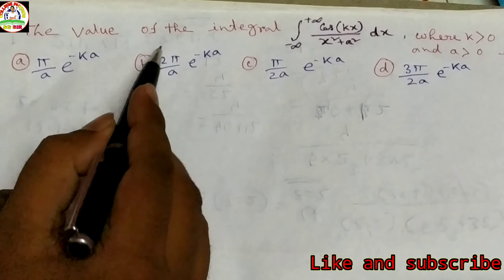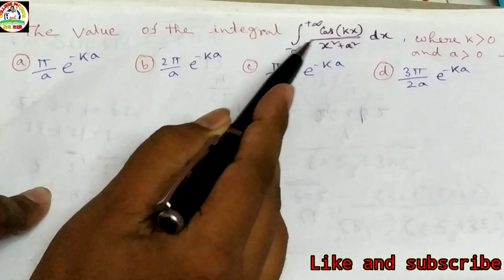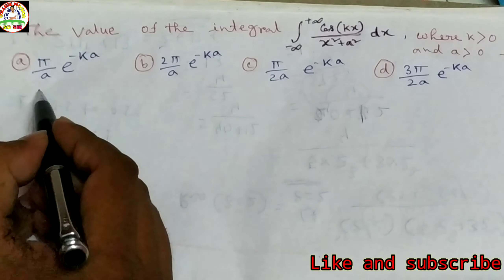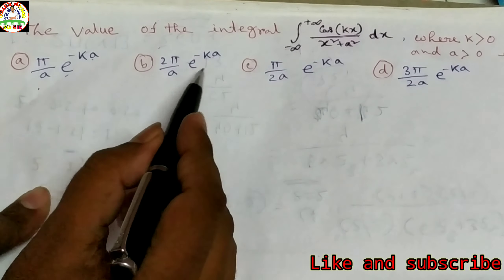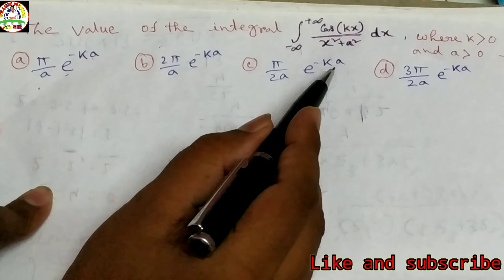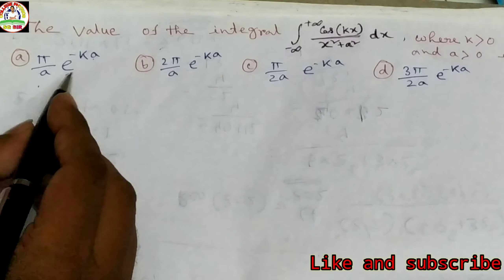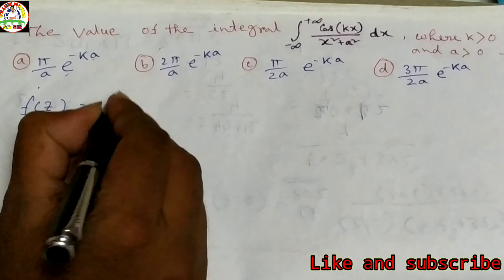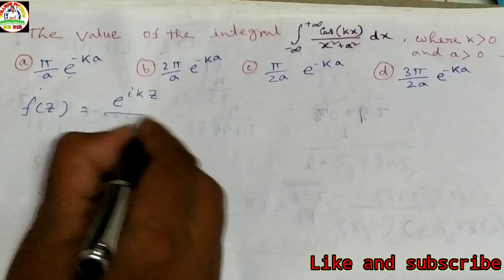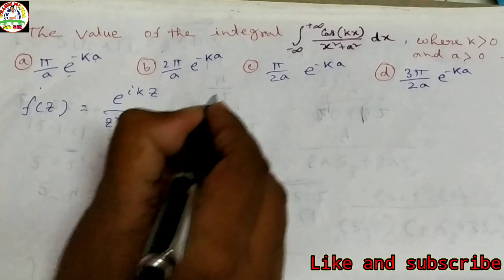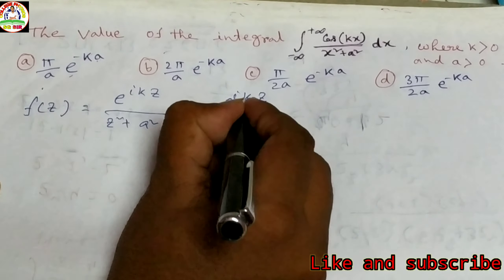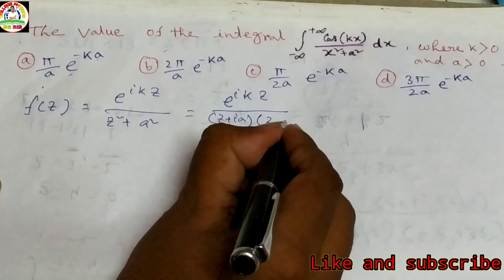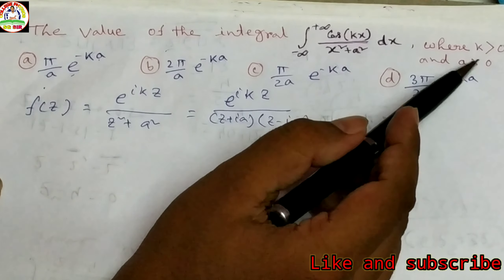Now an important problem from GATE 2019: find the value of the integral from −∞ to +∞ of cos(kx)/(x² + a²) dx, where k > 0 and a > 0. The options are π/a·e^(−k), 2π/a·e^(−k), π/(2a)·e^(−k), 3π/(2a)·e^(−k). We consider f(z) = e^(ikz)/(z² + a²) = e^(ikz)/[(z + ia)(z − ia)].